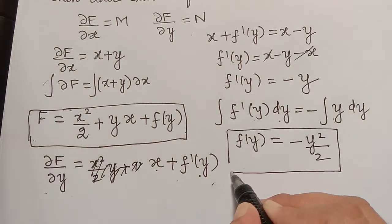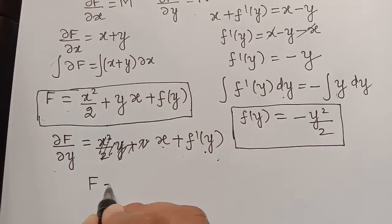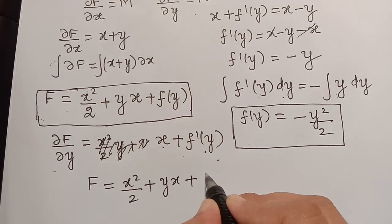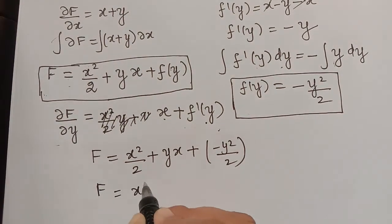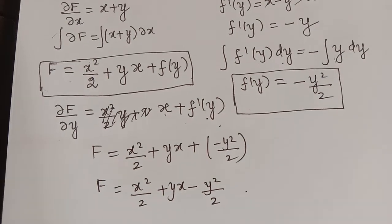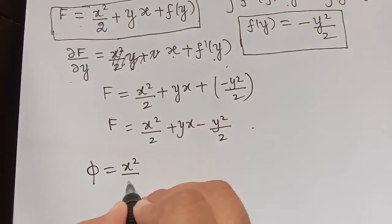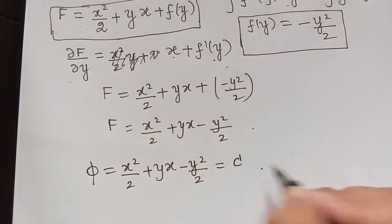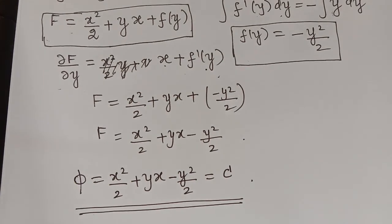Substituting f(y) back into F, we get the final solution: F = x²/2 + yx - y²/2. Writing this in the form of a general solution, φ = x²/2 + yx - y²/2 = C. This is the solution of the given exact differential equation. Hope you have understood this problem. Thank you.